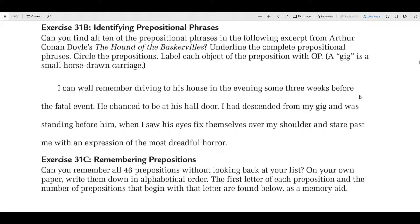Now this is identifying prepositional phrases. Can you find all 10 of the prepositional phrases in the following excerpt from Arthur Conan Doyle's The Hound of the Baskervilles? Underline the complete prepositional phrases, circle the prepositions, label each object of the preposition with OP. And a gig is a small horse-drawn carriage. I'll help you find the first one.